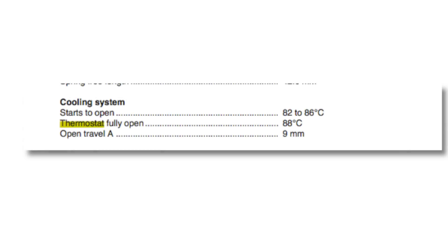The correct amount of data what you should see: cooling system starts to open 82 to 86 degrees centigrade, thermostat fully open at 88 degrees centigrade, and to get technical the open travel 9 millimetres. Now this is the thermostat for the Discovery MPI engine which is not very common. However, it's just a note to remember.